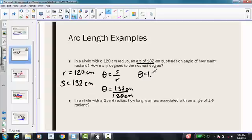So I have theta equals 1.1 radians. Then it asks how many degrees would this be, so I can use my conversion factor.